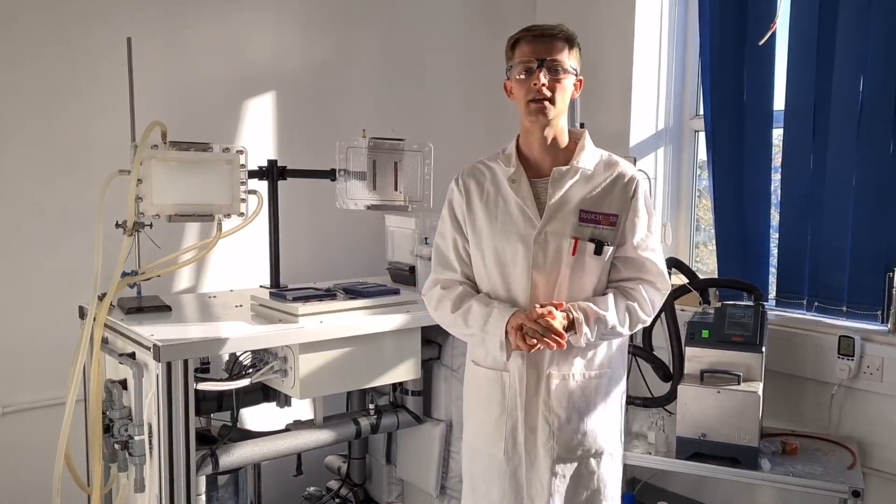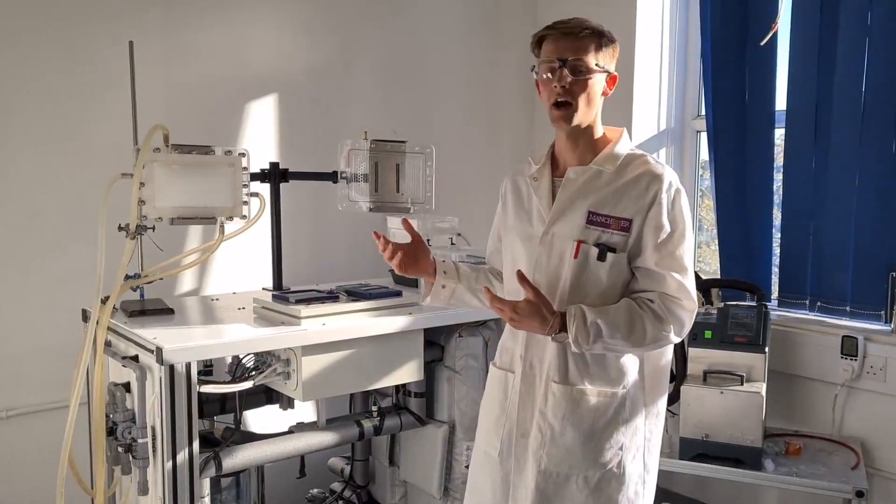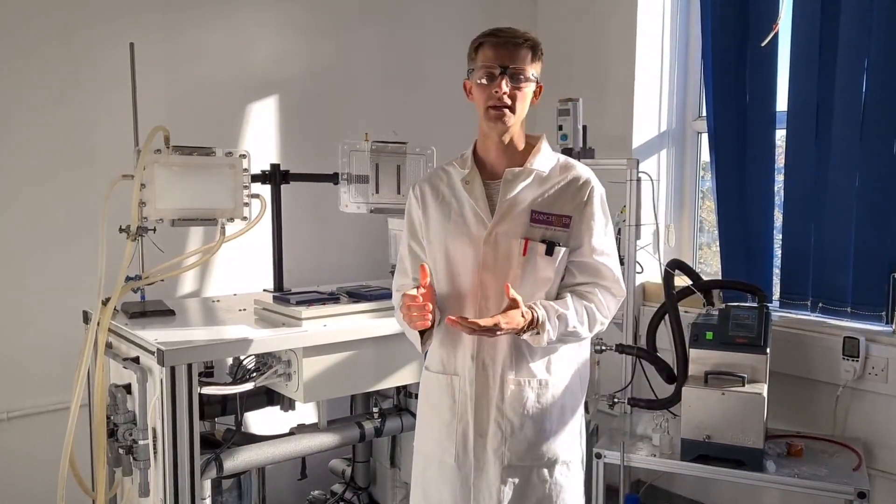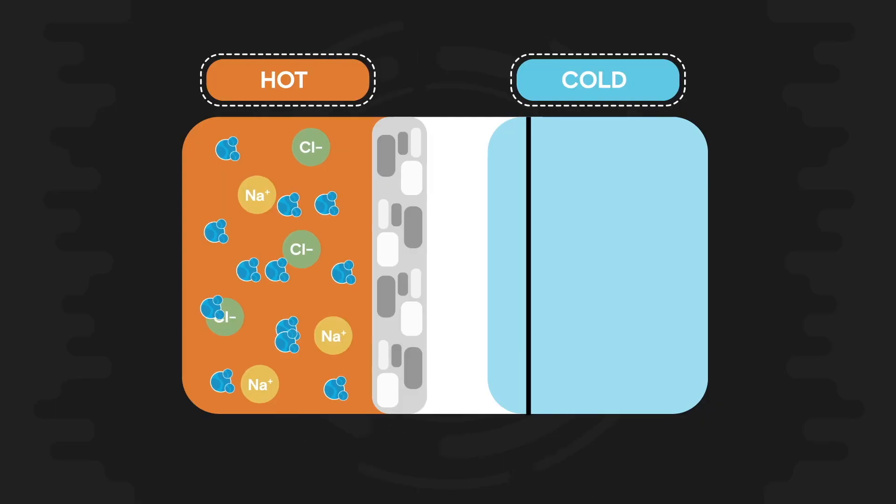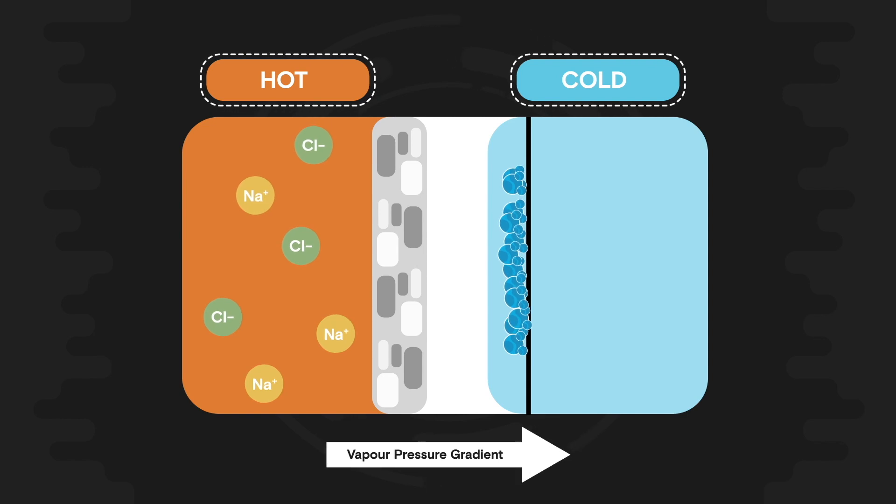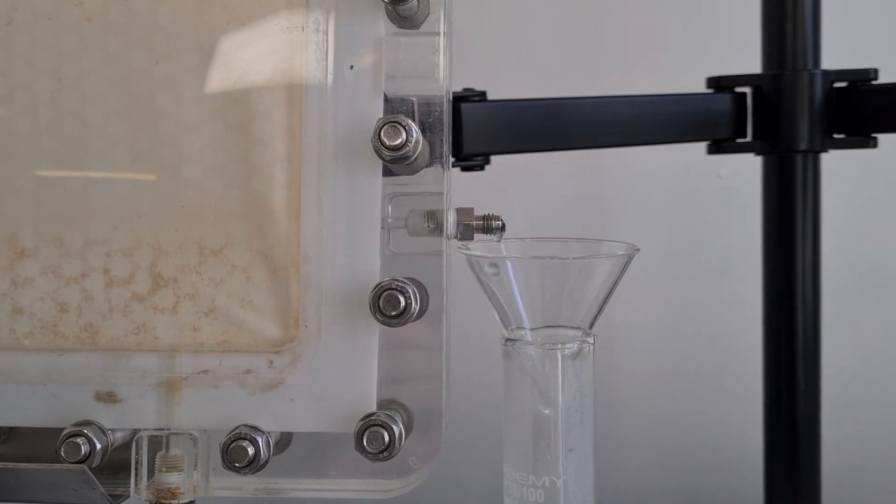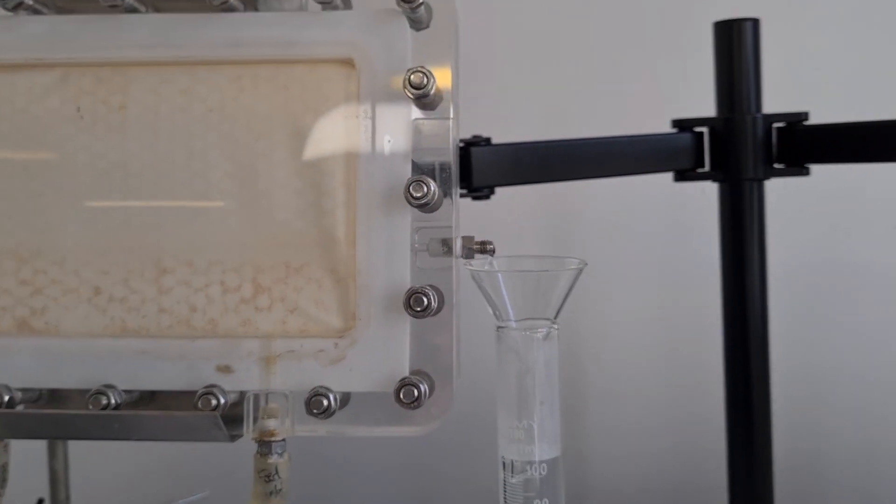And crucially, the difference here is that the membrane is not hydrophilic as in the case with reverse osmosis. It's actually hydrophobic. What that means is that the membrane repels liquid water. So only water vapor is able to pass from this side of the membrane through to the other side where it's condensed and collected, leaving all of the salts, heavy metals and other impurities on the feed side of the membrane.